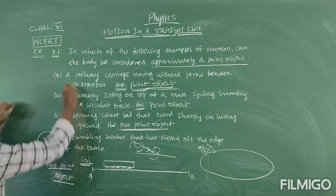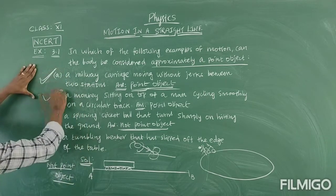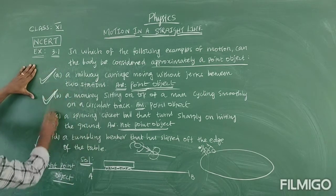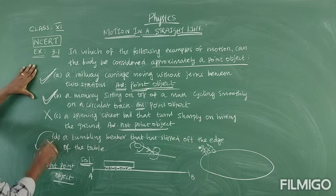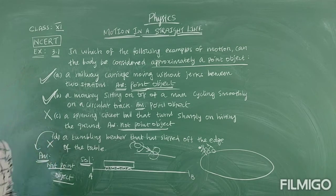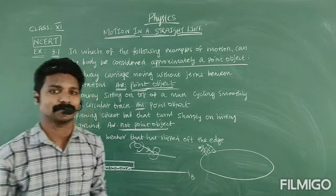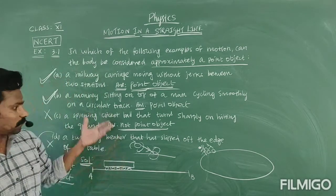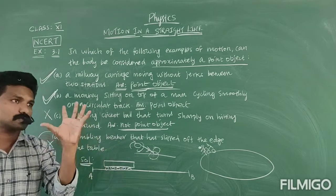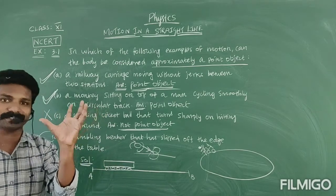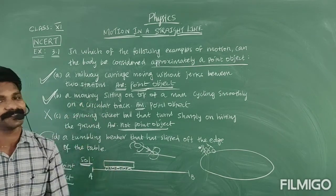So, first one: point object. Second one: point object. Third one: not a point object. And fourth one also: not a point object. I hope you understood how to analyze whether something is a point object or not a point object.